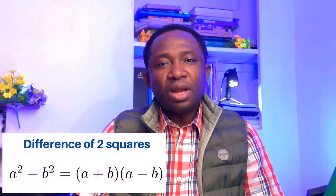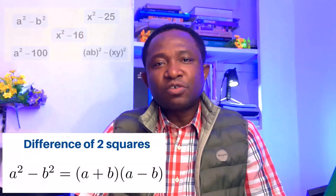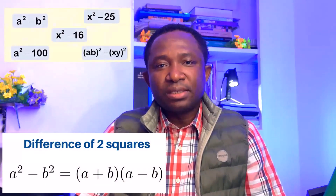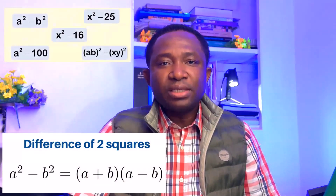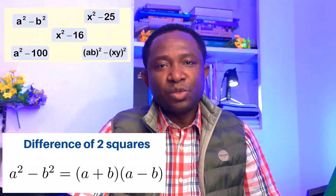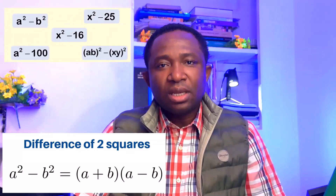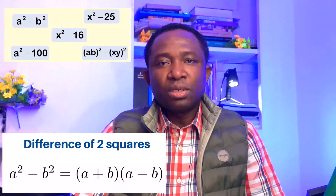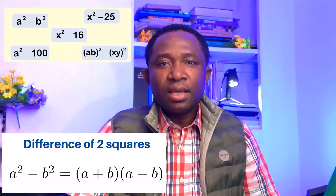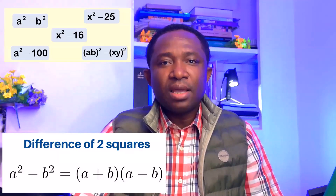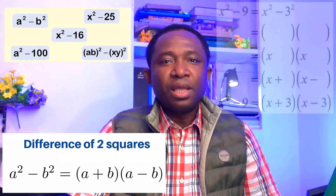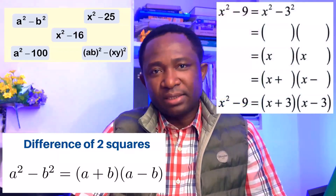The general formula for difference of two squares is: a squared minus b squared is equal to (a minus b) in brackets, times (a plus b) in brackets.